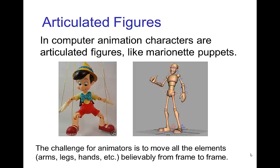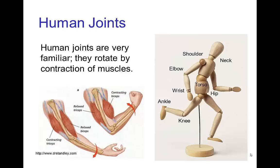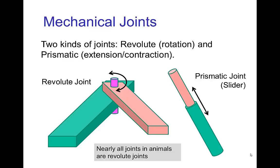Specifying each of the limbs like the arms, the legs, parts like the hands. Of course, we are very familiar with joints in the human body and how they are rotated by the contraction of the muscles — joints like the elbow or the ankle.